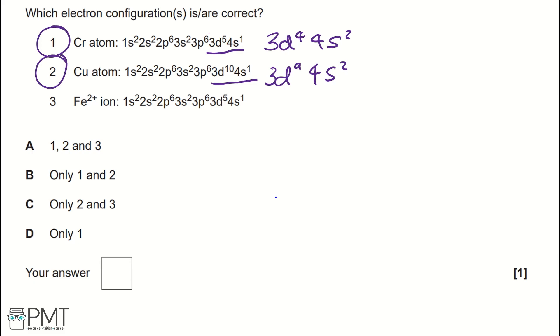If we draw an Fe atom or an iron atom to begin with, this would be 1s2, 2s2, 2p6, 3s2, 3p6, 3d6, 4s2.